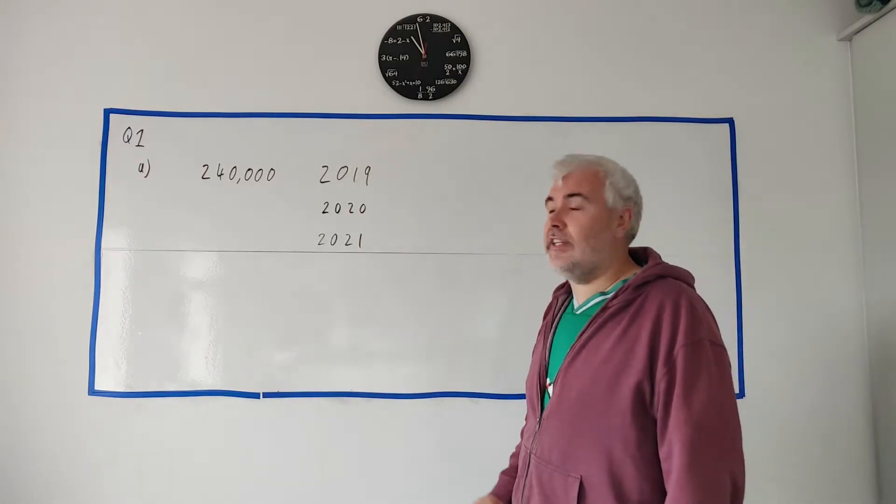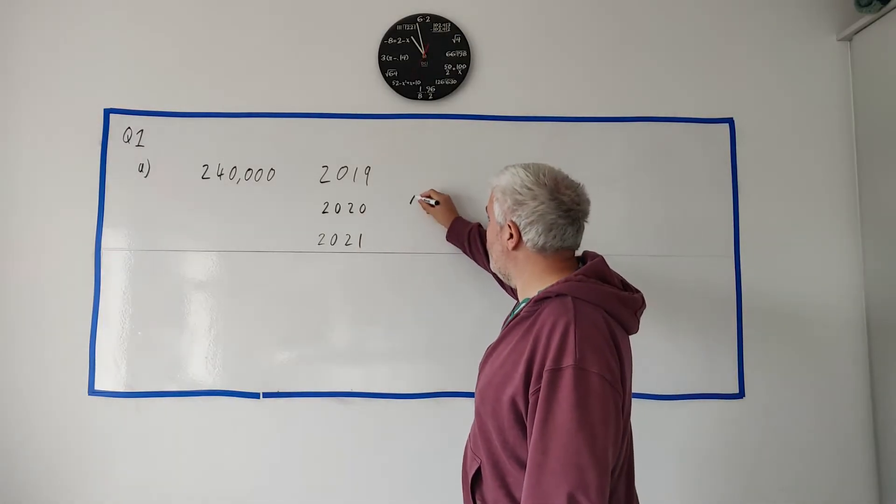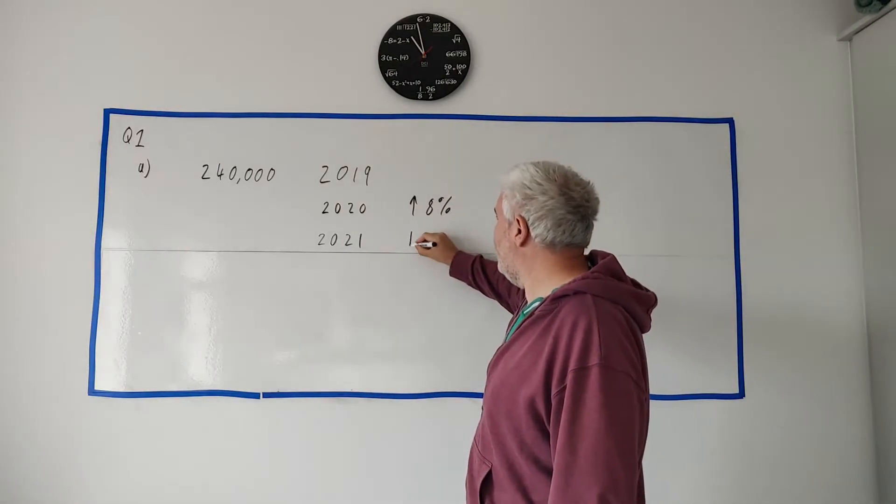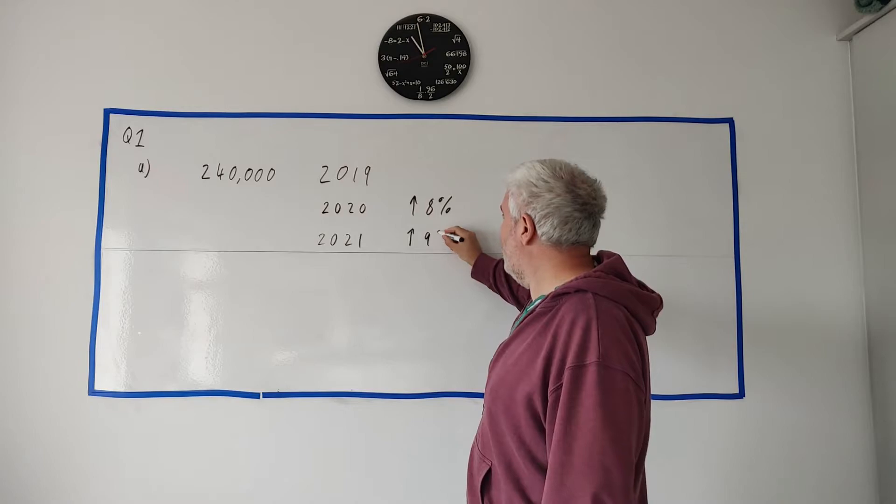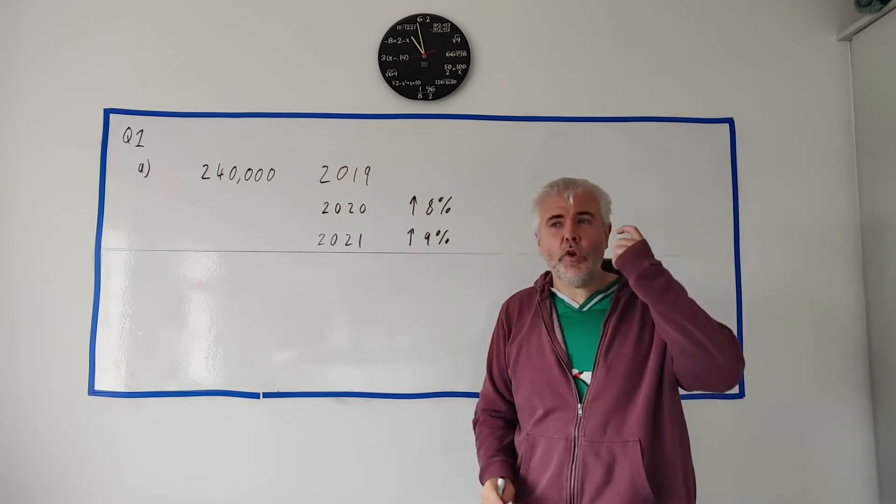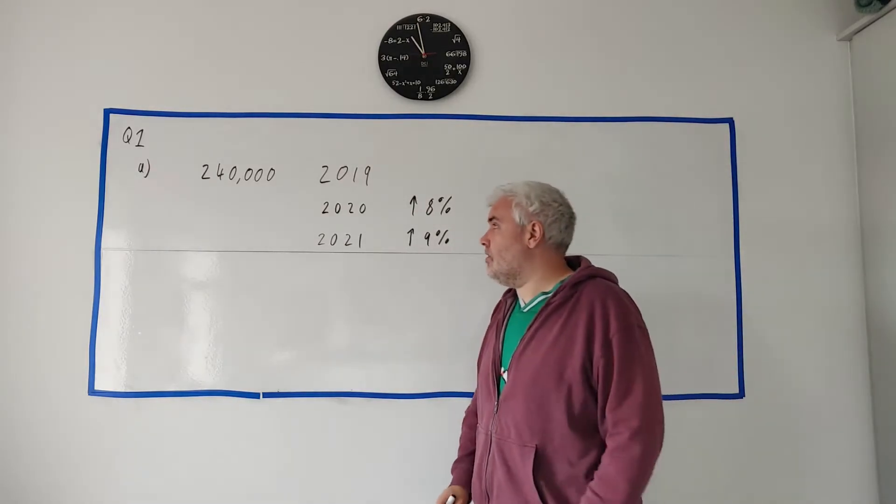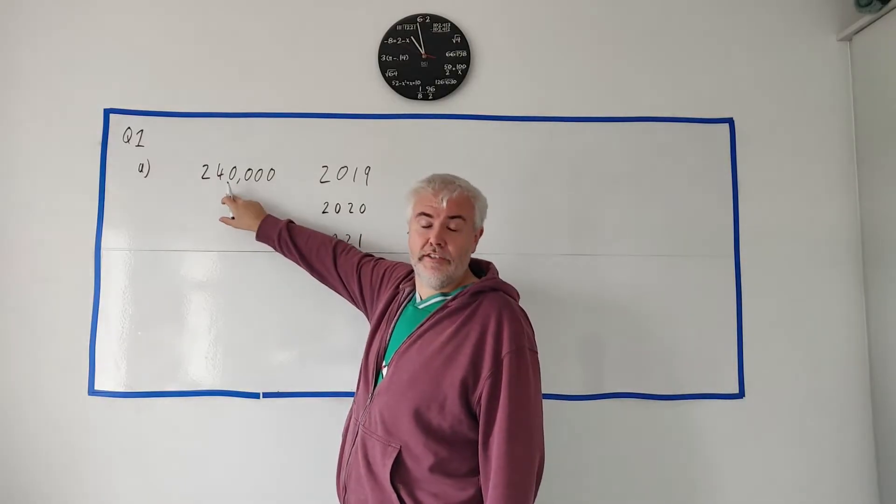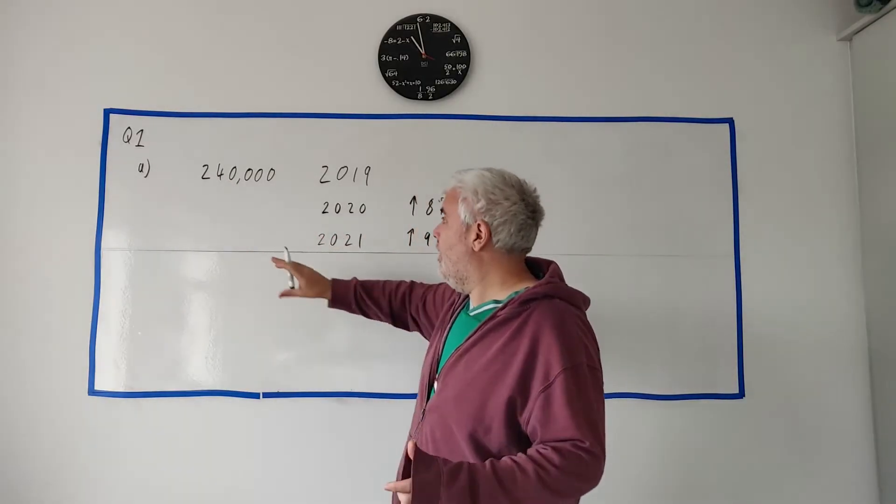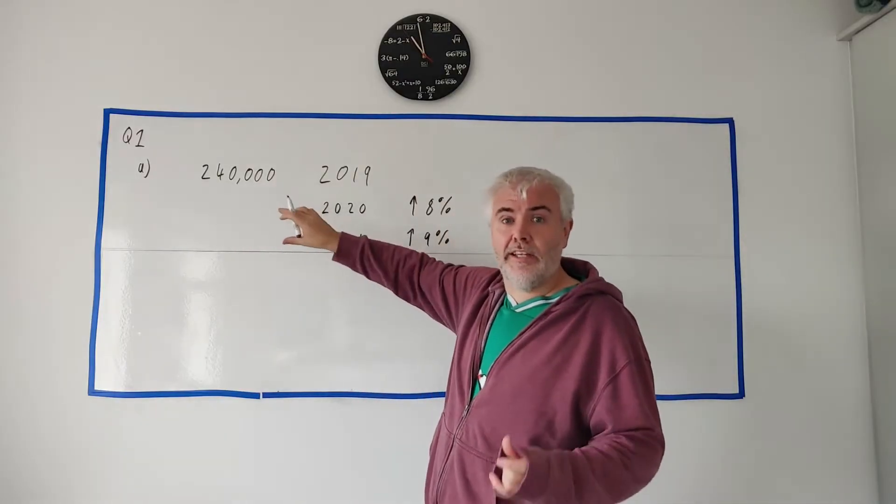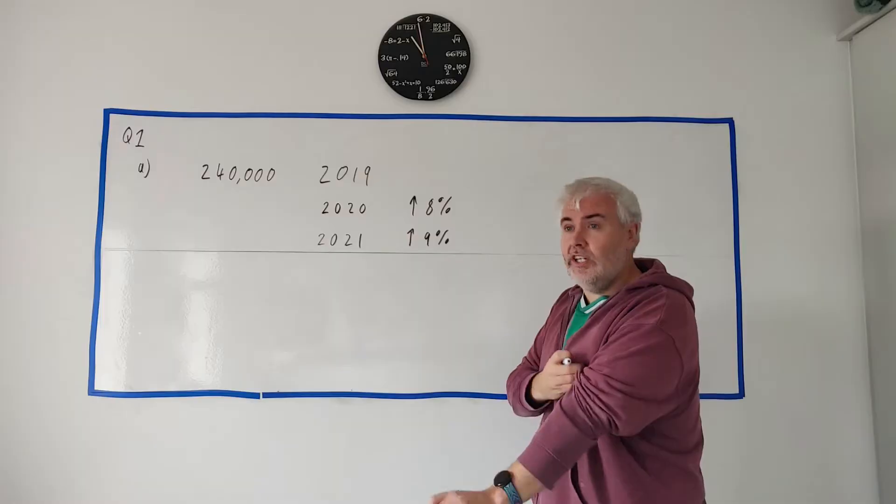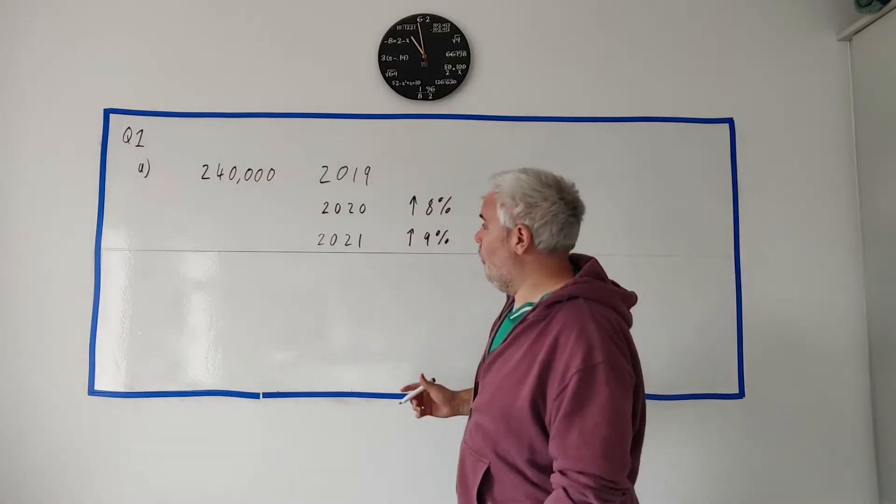It wants you to find out how much is it in 2020 and 2021. In 2020 it goes up 8% and in 2021 it goes up 9%. Really what they're asking is to get a number 8% bigger than this number, and then after you get that number find a number that's 9% bigger.